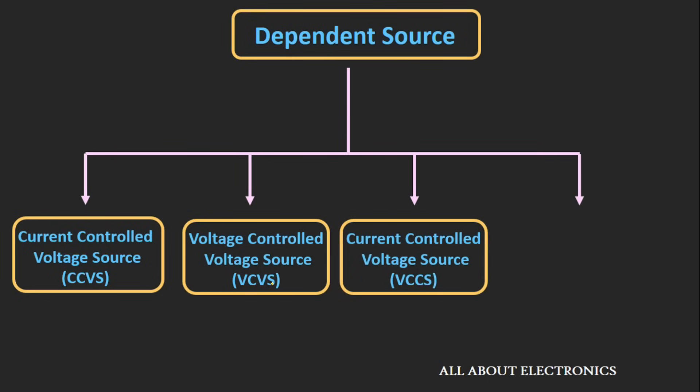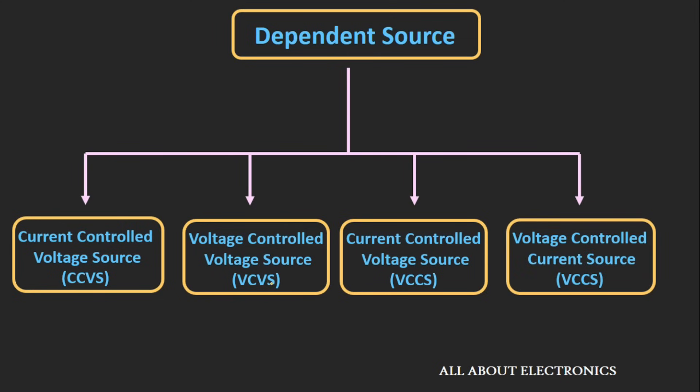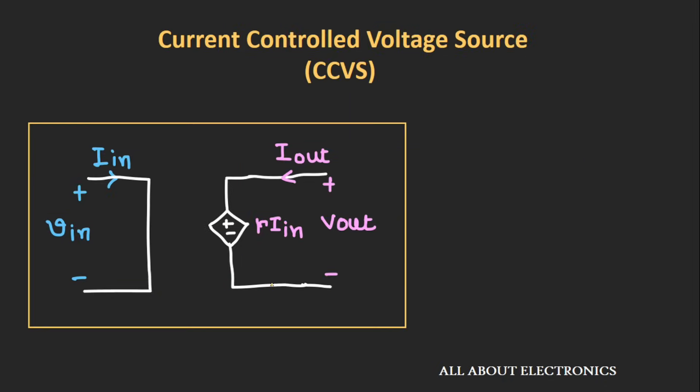The third is the current-controlled current source and the fourth one is the voltage-controlled current source. Let's see each of them one by one.